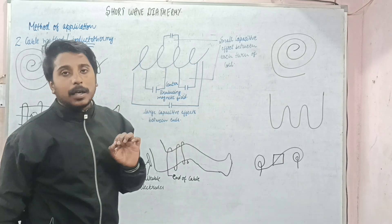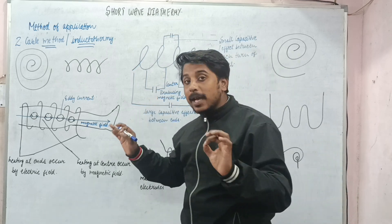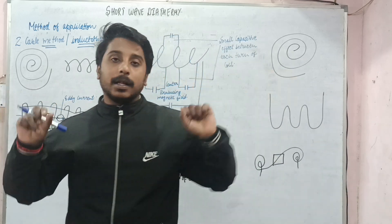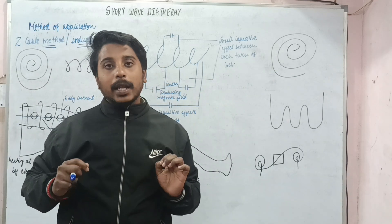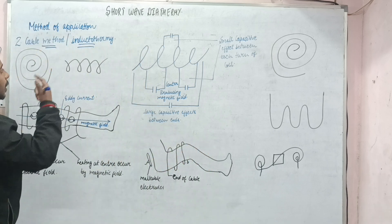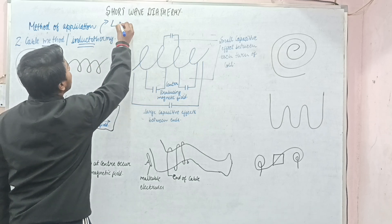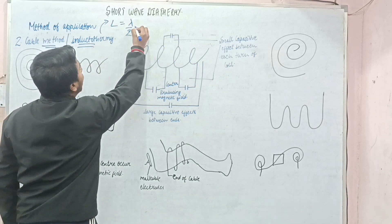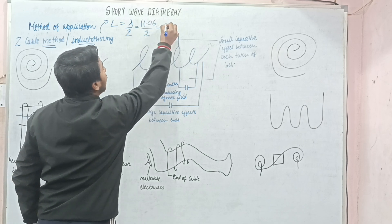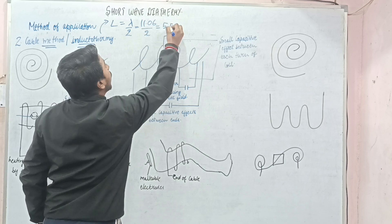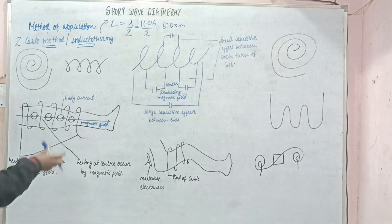It is one of the most commonly used methods of SWD application. Here we use a cable, which we wrap around the body part like a spiral, and then we apply the shortwave diathermy. Its length is half of the wavelength. The wavelength of SWD is 11.06 meters, so its half becomes 5.53 meters — this is the length of the cable.